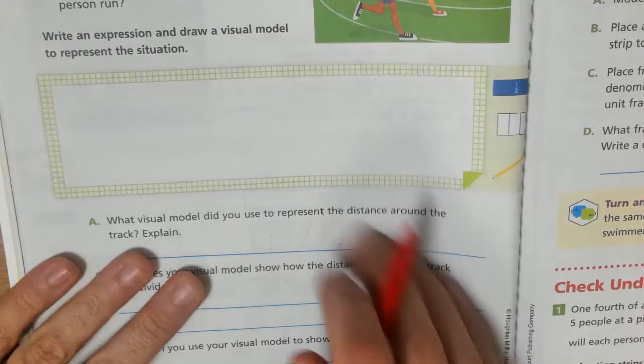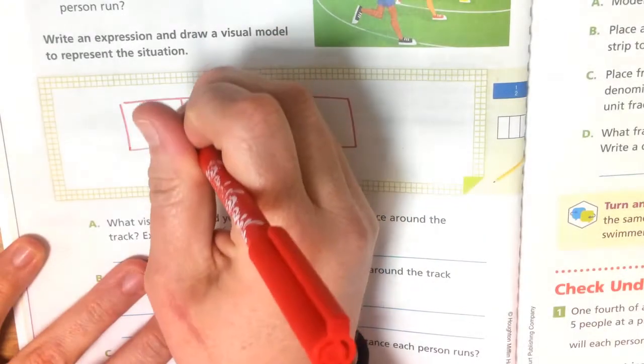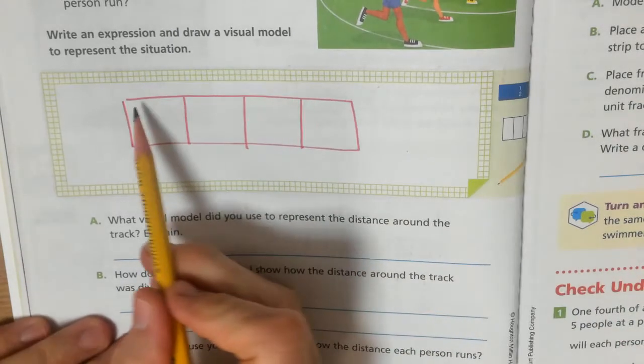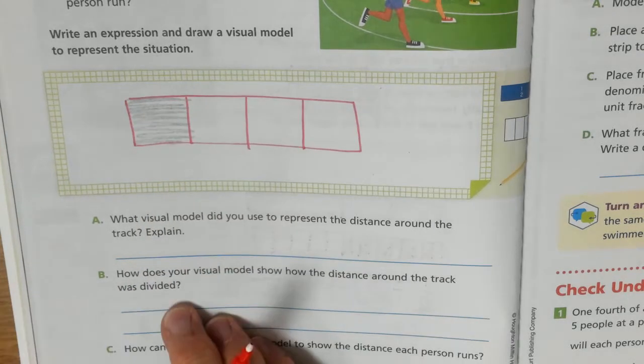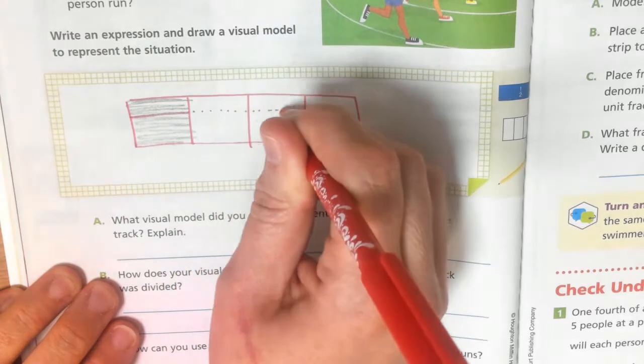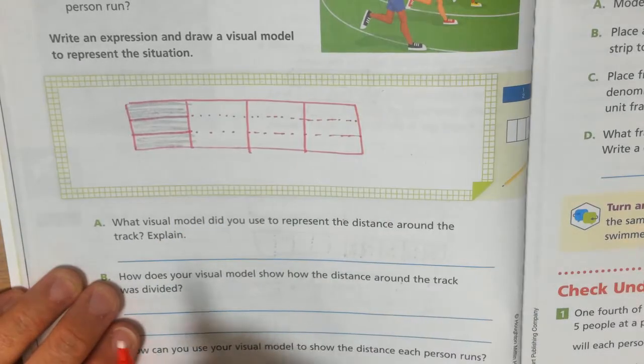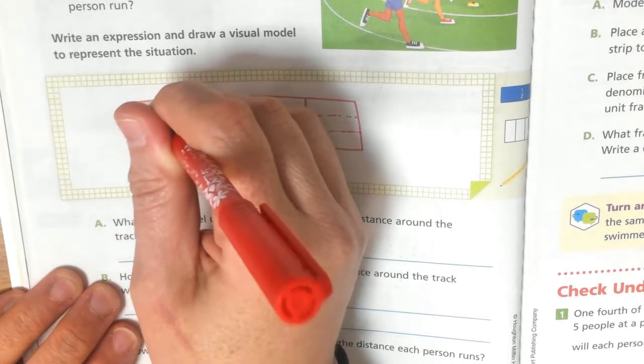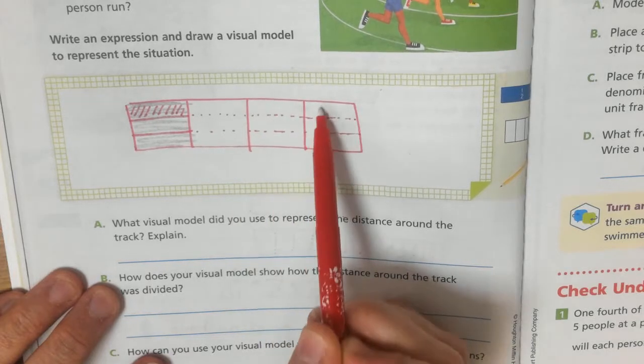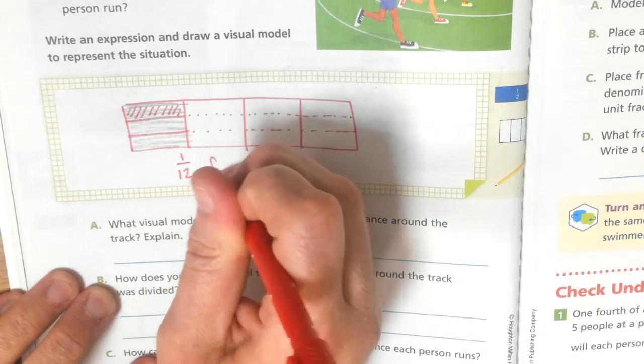Here's our whole mile, right? It's divided into fourths. They're going to share this one fourth evenly. If they're going to share the one fourth evenly, how many people are there? There are three people. So each person is only going to do one part of this. So there are one, two, three, four, five, six, seven, eight, nine, ten, eleven, twelve, right? So each person will do one twelfth of a mile.